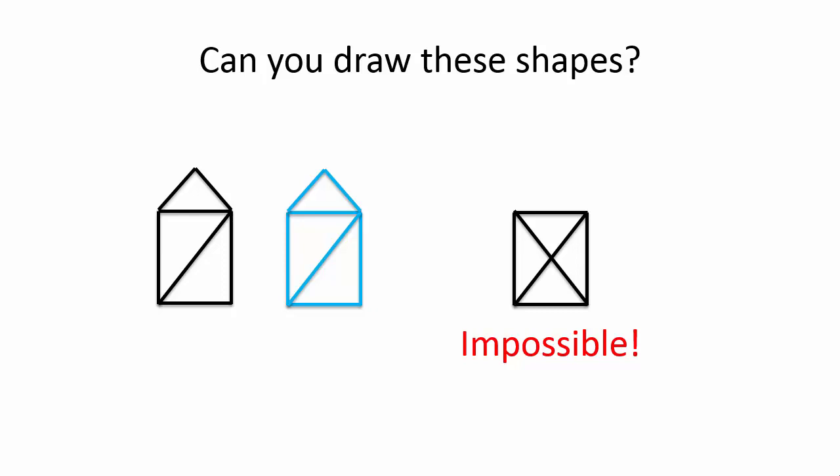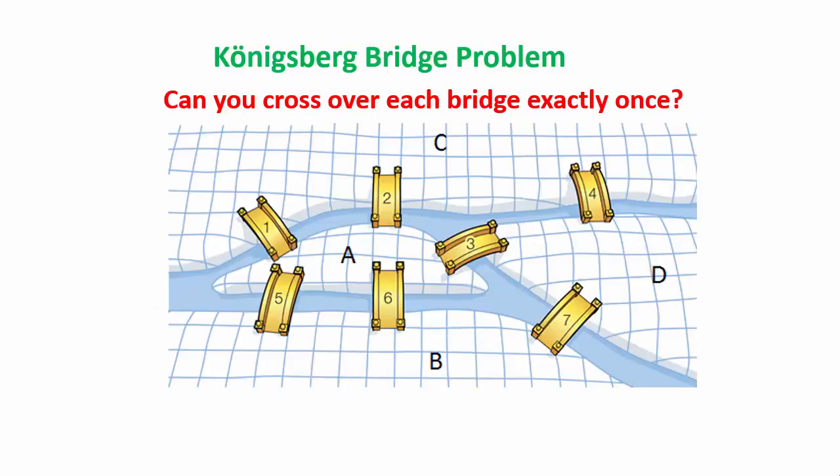That leads to a very famous mathematics problem based on a bridge in Russia, the Königsberg Bridge Problem.